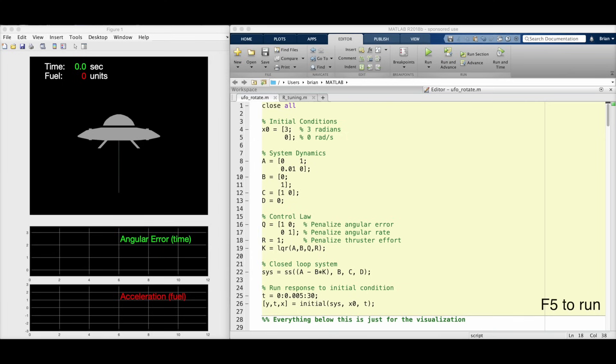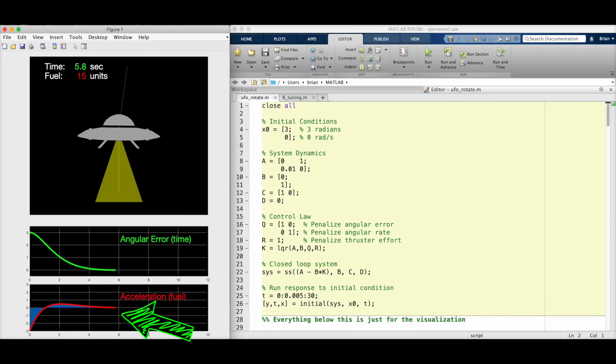Alright, let's run this script. You can see the UFO gets initialized to 3 radians, as promised. And up at the top, I'm keeping track of how long the maneuver takes, which is representative of the performance, and how much fuel is used to complete the maneuver. So let's kick it off and see how well the controller does. Hey, look at that. It completed the maneuver in 5.8 seconds, with 15 units of fuel, and it got the cow in the process, which is the important part. When the thrusters are active, they generate a torque that accelerates the UFO over time. Therefore, fuel usage is proportional to the integral of acceleration. So the longer we accelerate, the more fuel is used.